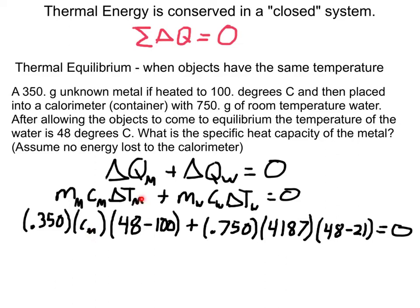And now think about the metal. The metal was initially at 100 degrees Celsius. It was heated up to that. Then it's placed in the water. And because of that, it cools down to a final of 48. So final minus initial for the metal is going to be 48 minus 100. AKA, if you look at this, this will come out to be negative, meaning this is going to be negative. The metal is losing thermal energy, which is true. It's cooling down.